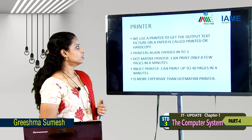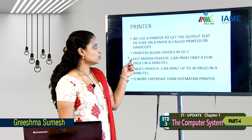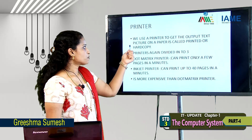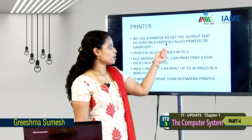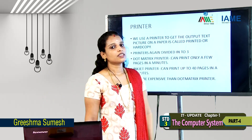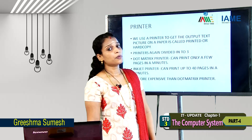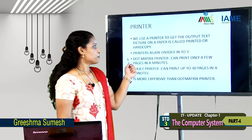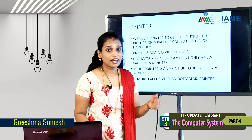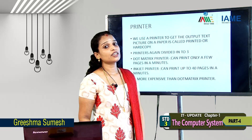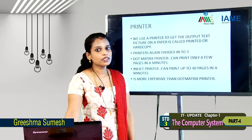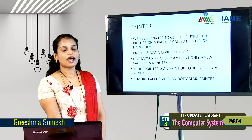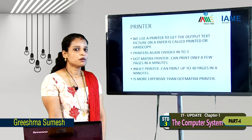Printer — we use a printer to get the output. Text or pictures on a paper is called a printout or hard copy. Printers are again divided into three: dot matrix printer, inkjet printer, and laser printer.